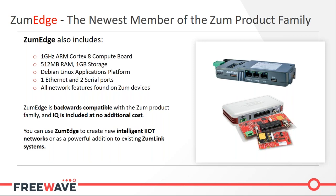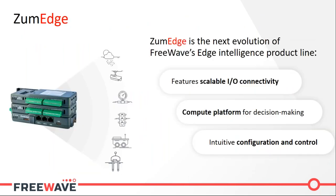The ZoomEdge can integrate natively into existing ZoomLink networks or be used to build standalone networks with IO and intelligence at each layer. The major features that the ZoomEdge introduces to the Zoom line are first and foremost scalable IO connectivity — you can stack FreeWave IO EX modules on this device and bring IO to your network quickly. It also includes a standard compute platform and a simple but powerful configuration and programming interface.